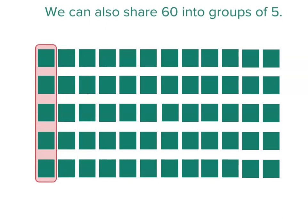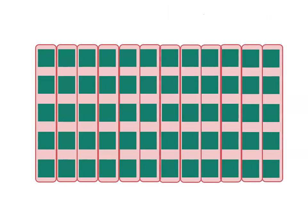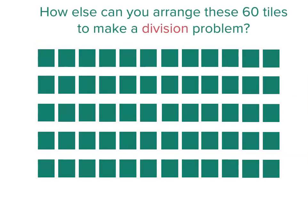And this particular array could also help us see what 60 shared into groups of 5 looks like, because our columns have 5 pieces. So we could work out 60 shared into groups of 5. Or we could just write it as 60 divided by 5.